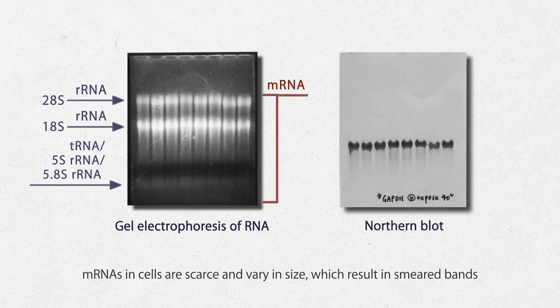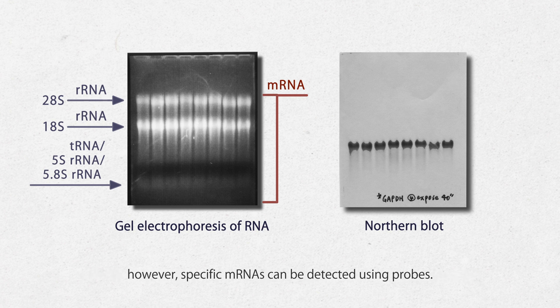mRNAs in cells are scarce and vary in size, which result in smeared bands. However, specific mRNAs can be detected using probes.